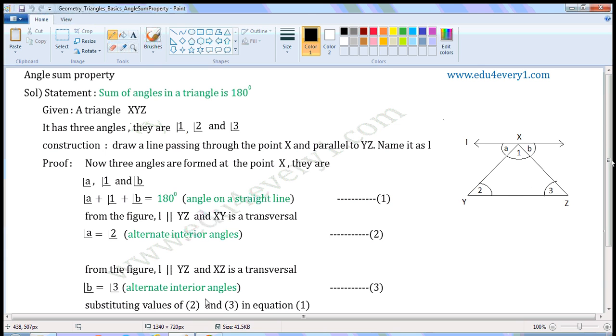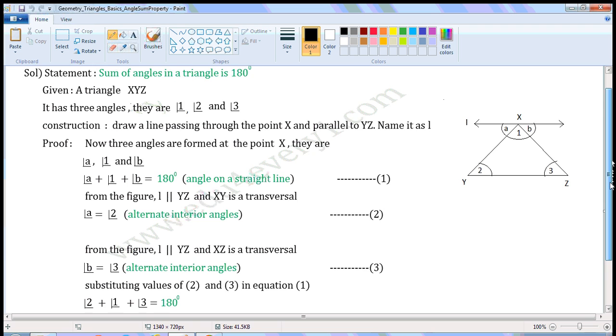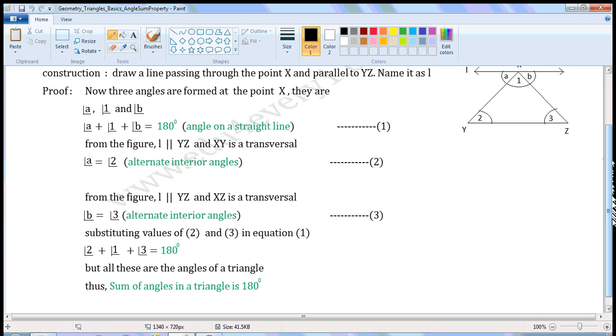Substituting values of equations 2 and 3 in equation 1. Angle A is equal to Angle 2. Angle B is equal to Angle 3. Substituting these values in equation 1. Angle 2 plus Angle 1 plus Angle 3 is equal to 180 degrees.